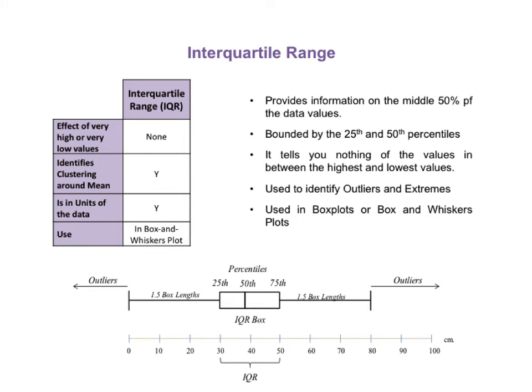The interquartile range, or IQR, is illustrated as the box in a box-and-whiskers chart. Everything else in the chart is outside the IQR. The box tells us where the middle 50% of the data are clustered. From the scale at the bottom of this slide, the IQR box in this example extends between data values of 30 and 50 centimeters, so the interquartile range is 50 minus 30, which equals 20. 25% of the data points have values less than the lower boundary of the box, and 25% have values greater than the upper boundary — so the box defines what is sometimes called the middle 50.